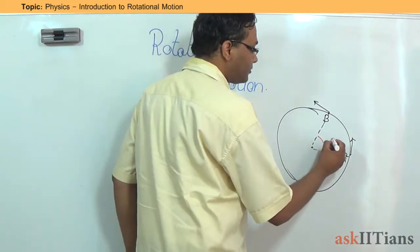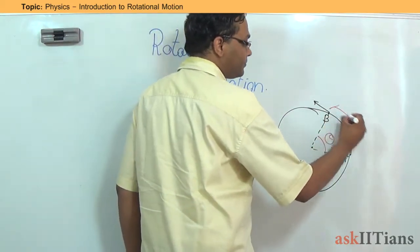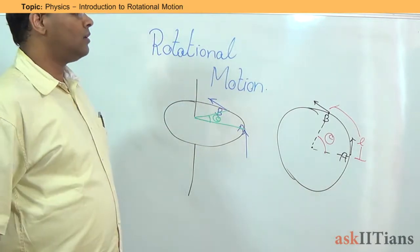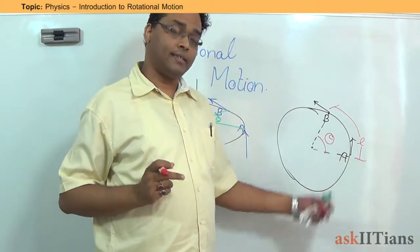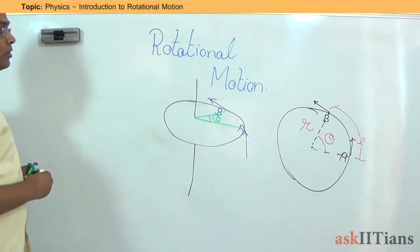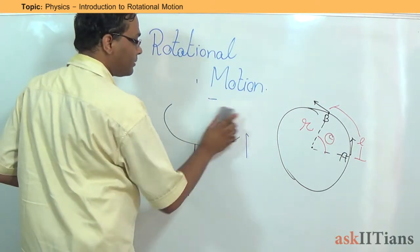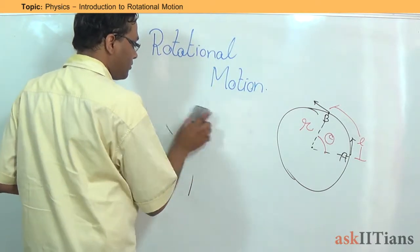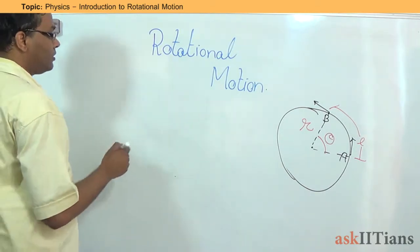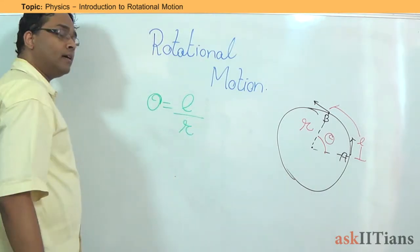I will say that theta is this angle. And L is the arc path that has been covered, theta is this angle, and the radius of this path is equal to R. Taking these things into account, what can we get as a result? I will simply say theta can be written as L divided by R.